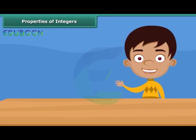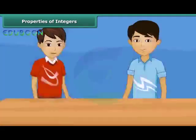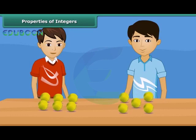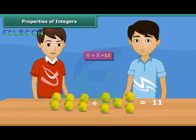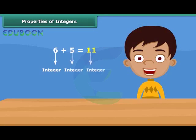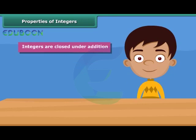Students, what do we get if we add two integers? Let us see. Rohan has six balls. His friend Sohan has five balls. So how many balls are there in total? Yes, eleven balls in total. From this example, we can say that addition of two integers is also an integer. So, integers are closed under addition.